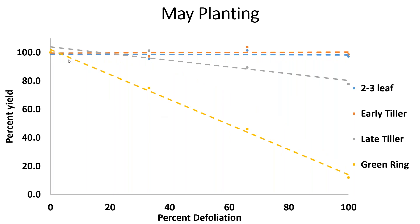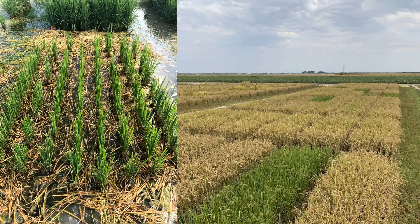Looking at a May planting versus an April planting, the green ring stage takes a hit very quickly even at low levels of defoliation, and late tiller is also impacted. The later you are in the rice production phase when armyworms hit, the more severe the yield loss. However, at two and three leaf and early tiller stages, there's hardly any damage at all. After five years of looking at this, we feel comfortable making management recommendations based on growth stage.